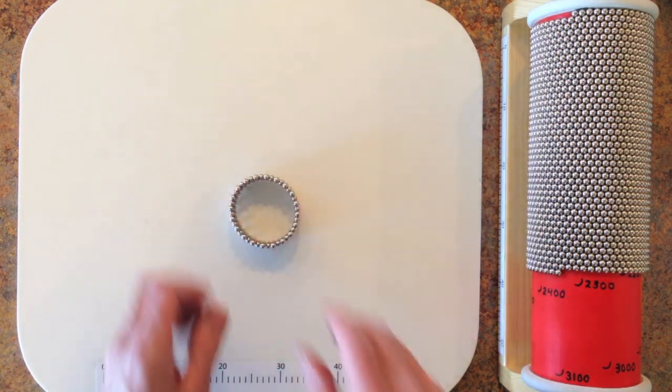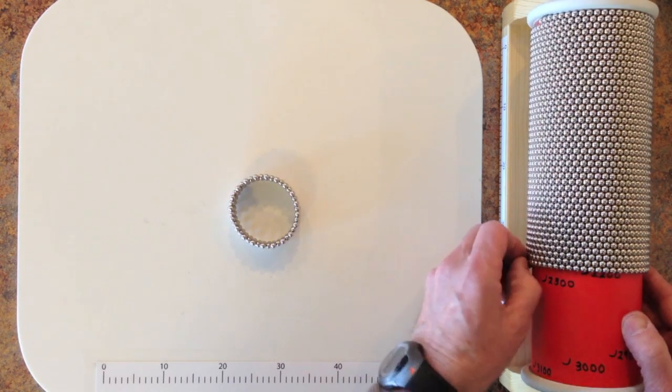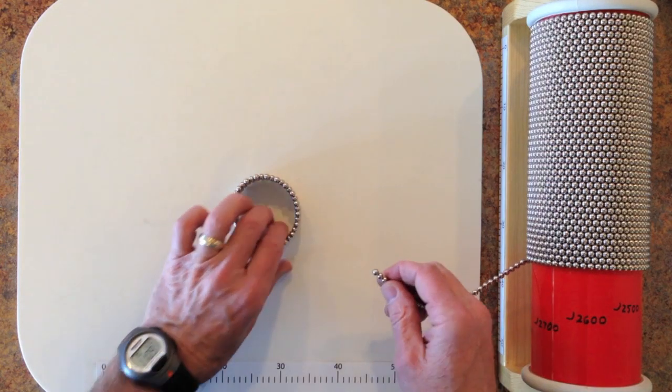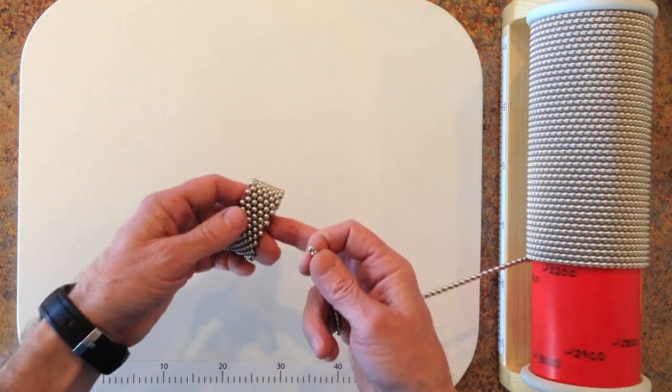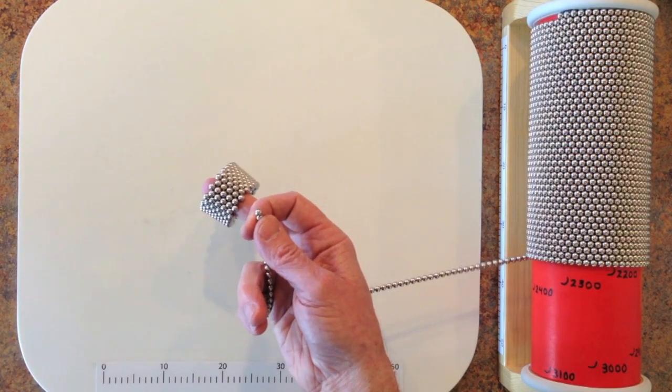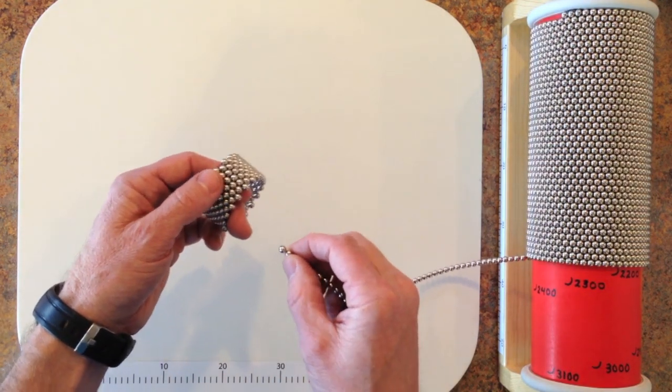The columns of the outer wall are made from a single chain that zigzags between one end of the tube and the other. To start this process, find the end of the tube that attracts the end of the chain and attach the end of the chain to a magnet at this end of the tube.